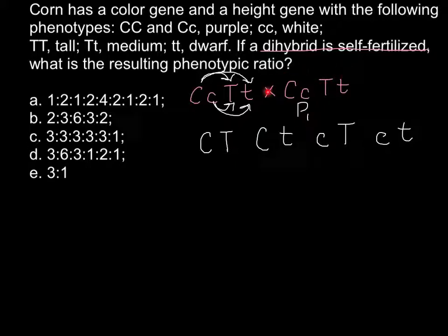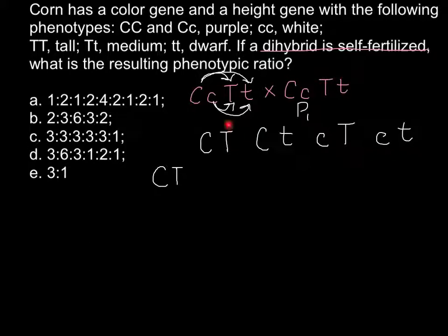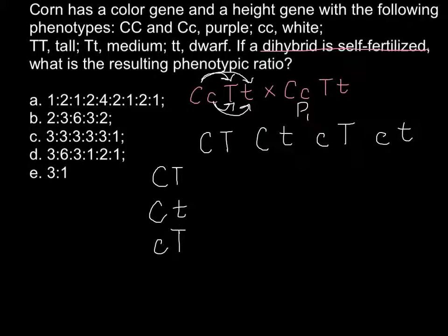Parent 2, as you see, has the same genotype, so parent 2 would produce the same types of gametes — four different types: capital C and capital T (CT), capital C and small t (Ct), small c and capital T (cT), and small c and small t (ct).